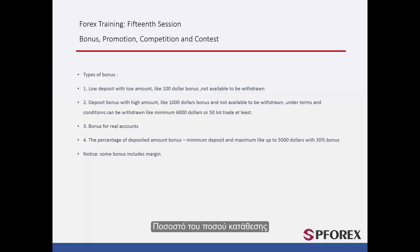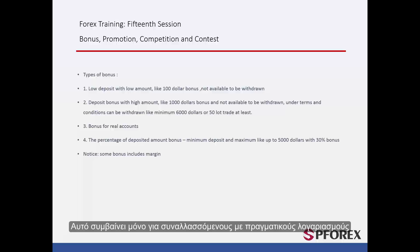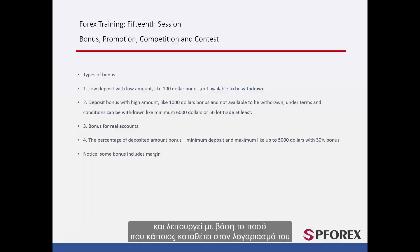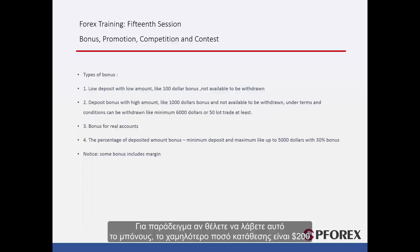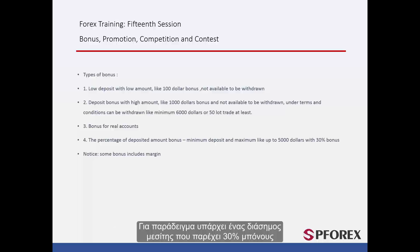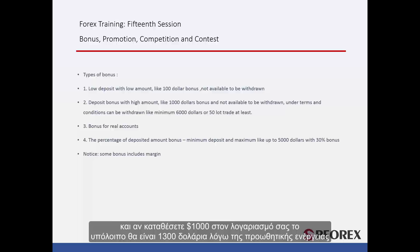The Percentage of Deposited Bonus Amount: this happens only for parties with real accounts and it works based on the amount that a party deposited to their account. If a trader would like to receive this type of bonus, there are certain rules they must follow. For instance, the lowest amount to deposit is $200. There is a famous broker that provides a 30% bonus, and if you deposit $1,000 into your account, your balance will be $1,300 due to the promotion.